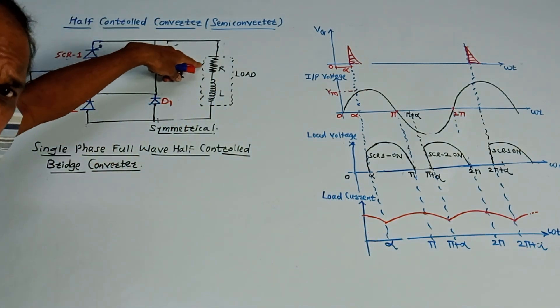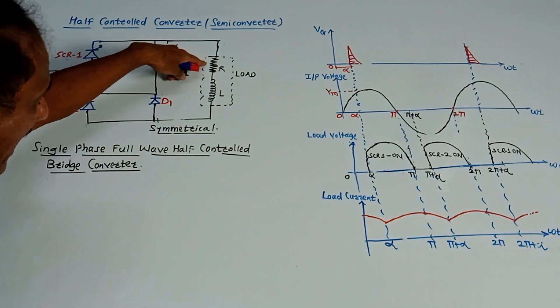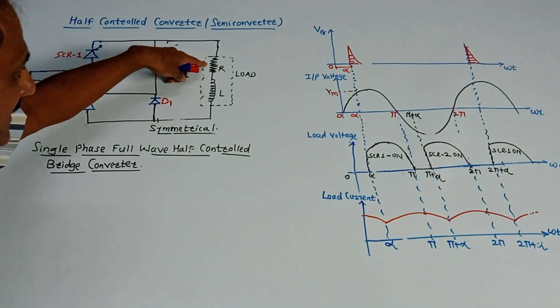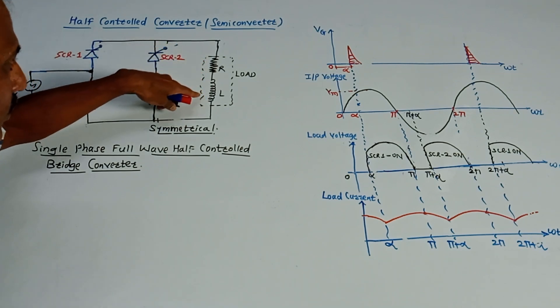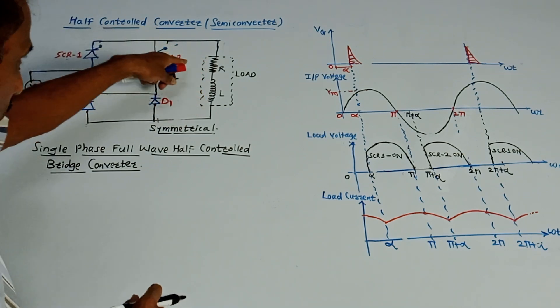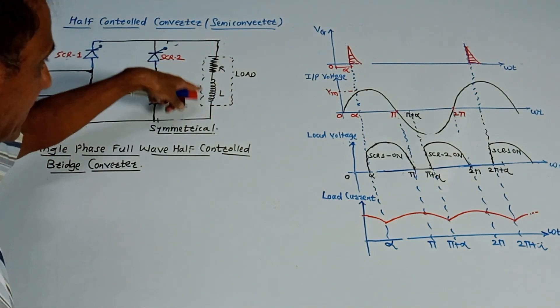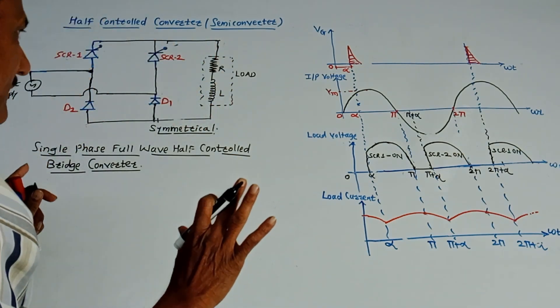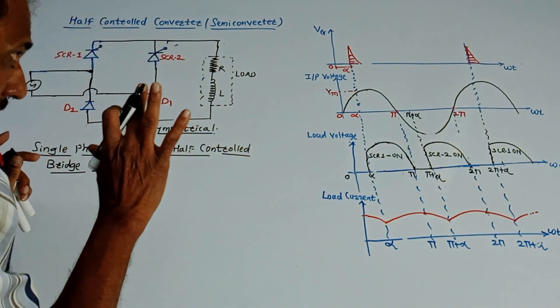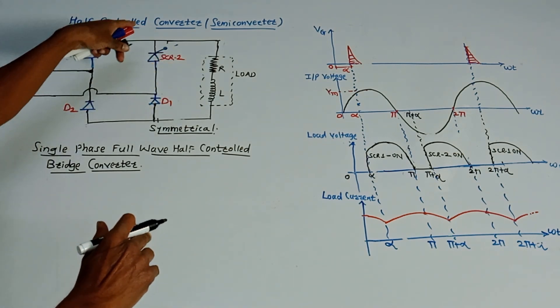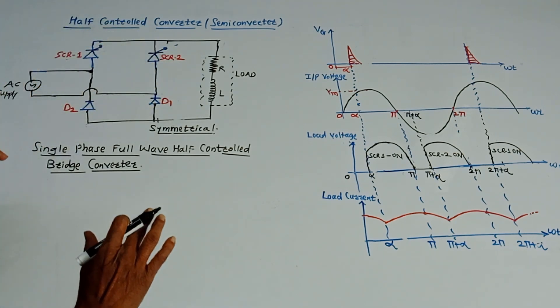In this case, we are using an RL load, that is a resistor-inductive load. This is the load which is connected at the output side. Now let us talk about the working of this circuit.